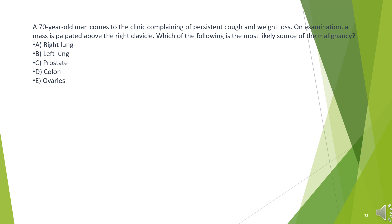A 70-year-old man comes to the clinic complaining of persistent cough and weight loss. On examination, a mass is palpated above the right clavicle. Which of the following is the most likely source of the malignancy? A. Right lung. B. Left lung. C. Prostate. D. Colon. E. Ovaries.